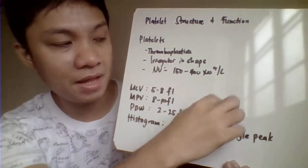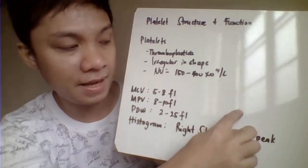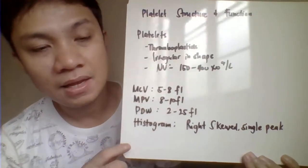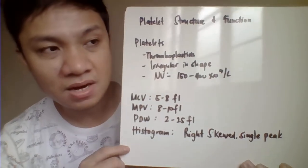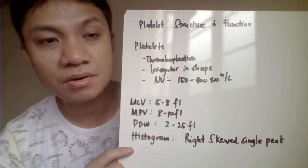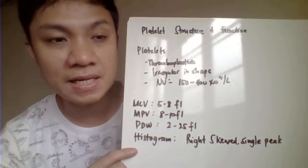Most likely, platelets are concentrated with a right-skewed distribution — like a bell shape shifted to the right. The graph also represents a single peak.